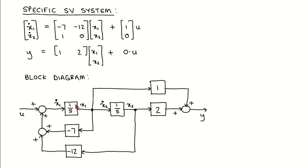There are two integrators with their outputs being the states x1 and x2. The inputs of the integrators are therefore x1 dot and x2 dot.